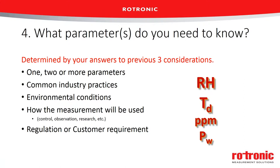Consider how the measurement will be used. If you have a control or measurement system expecting a certain input, you must choose an instrument that can provide that parameter. Regulation could also determine what you're measuring — maybe you have to report relative humidity in a storage warehouse, or measure and report parts per million. You'll have to choose an instrument that gives you that measurement, or if you're building a system for a customer, you must match the instrument to those specific requirements.